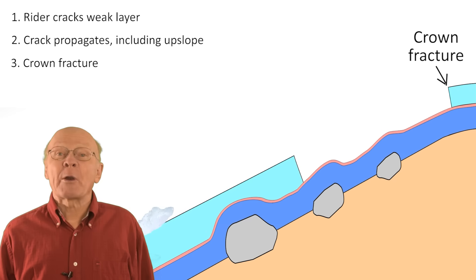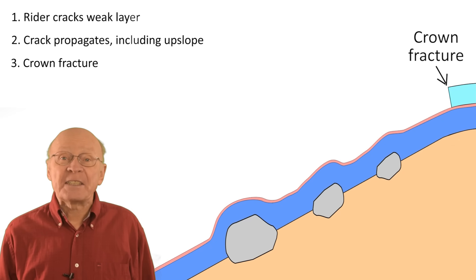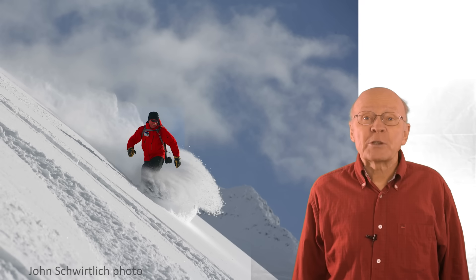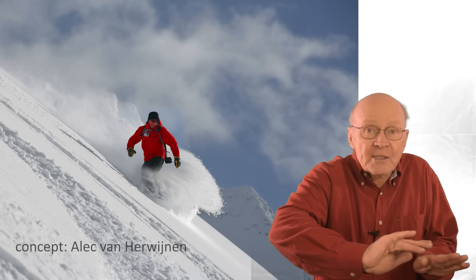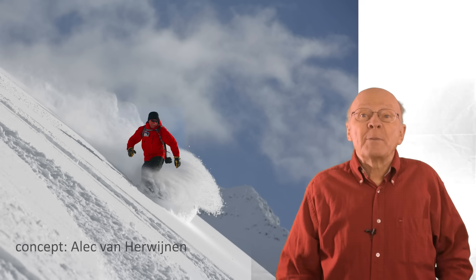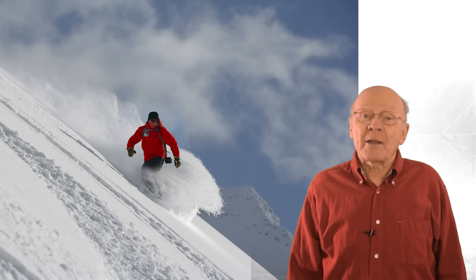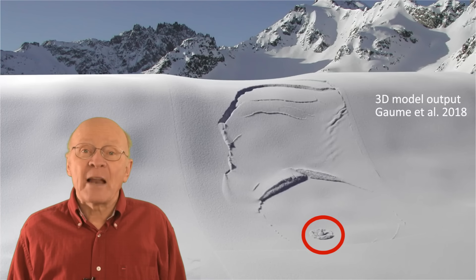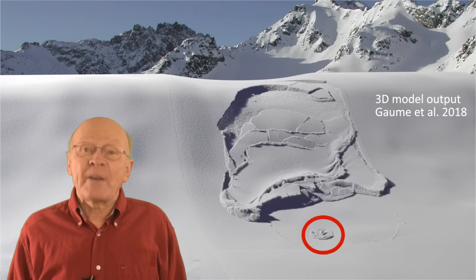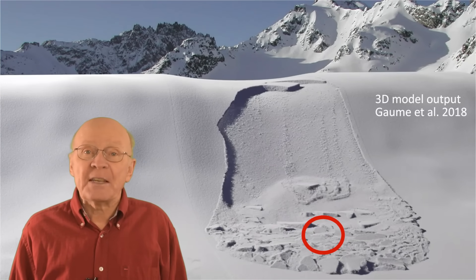To see where triggering is most likely, let's look at how slope angle affects these three stages. One: on steeper slopes, riders turn more often. With each turn across the slope, they apply more stress to the snowpack and are more likely to crack the weak layer. In this amazing model and in some avalanches, including fatal avalanches, the avalanche is triggered where the slope is not steep.